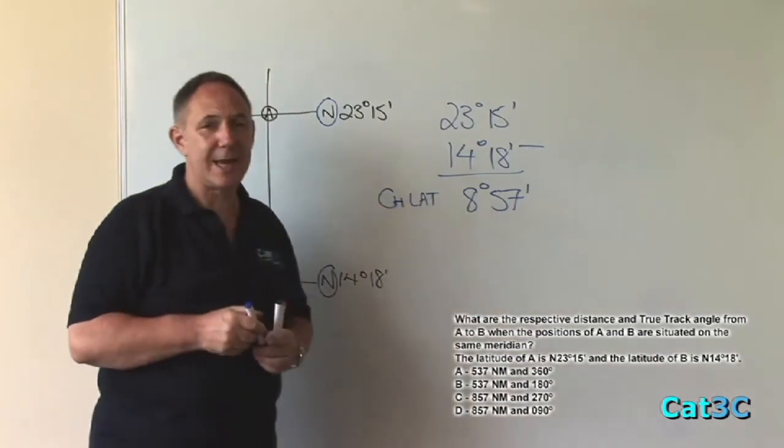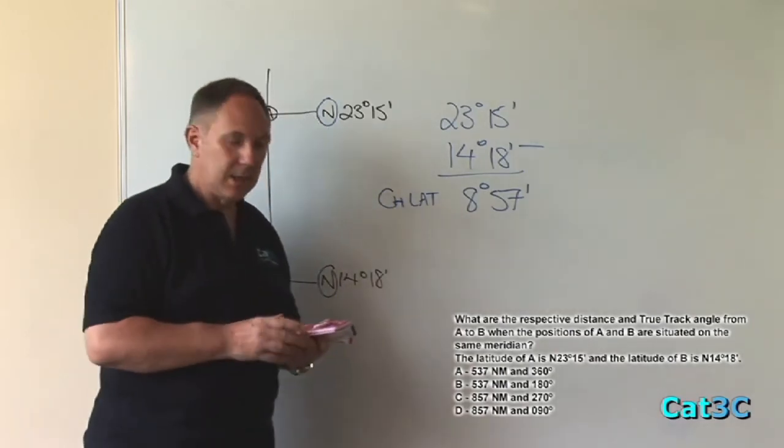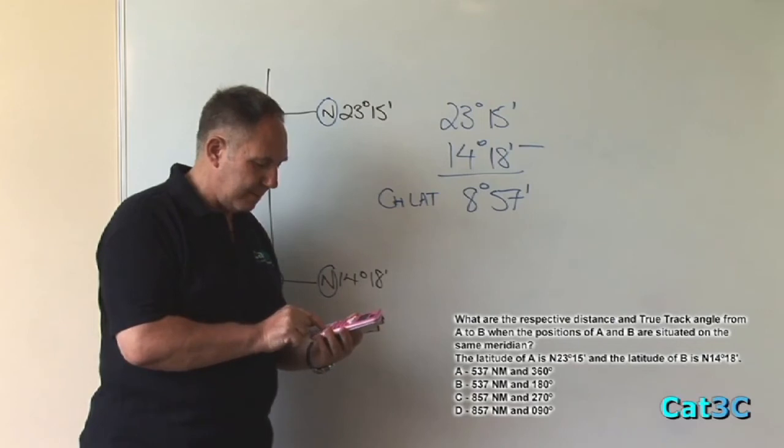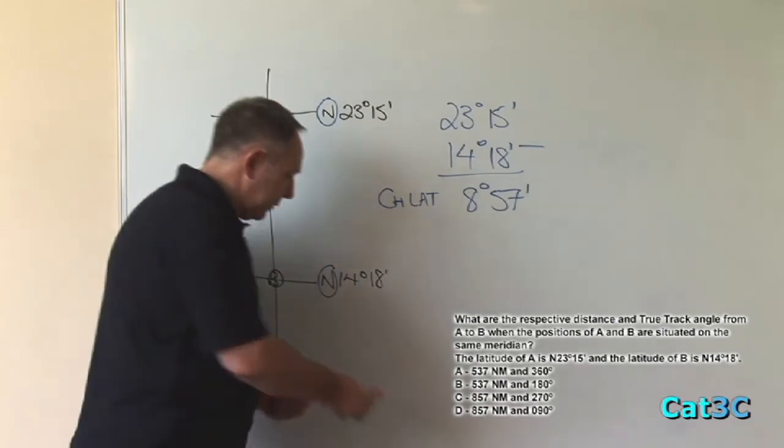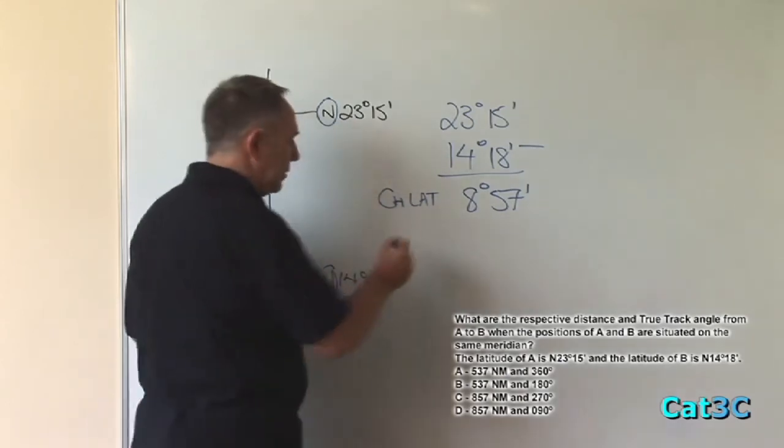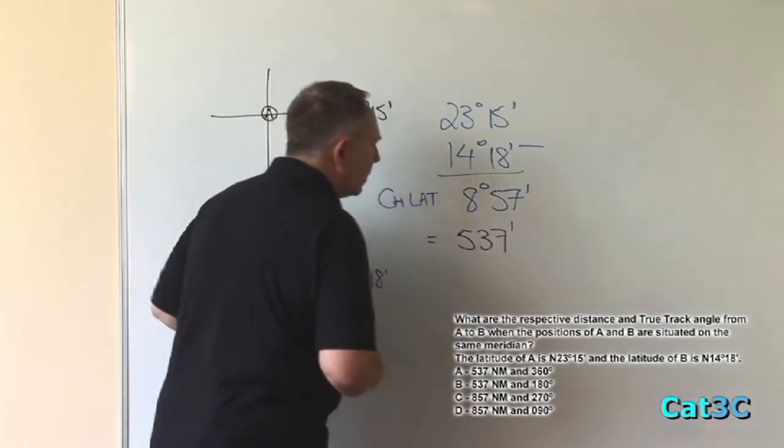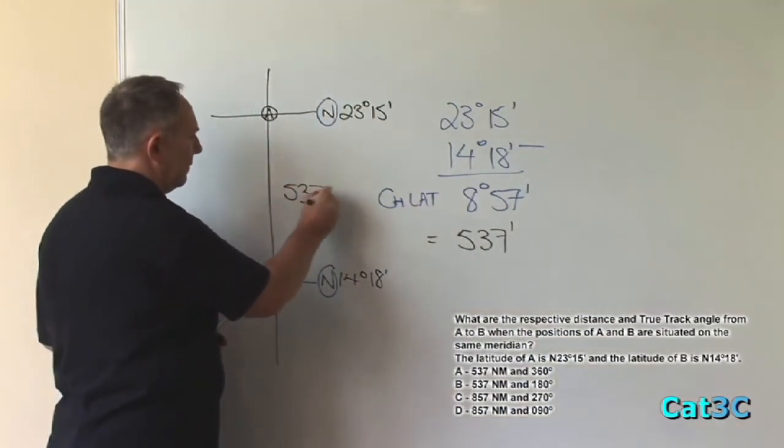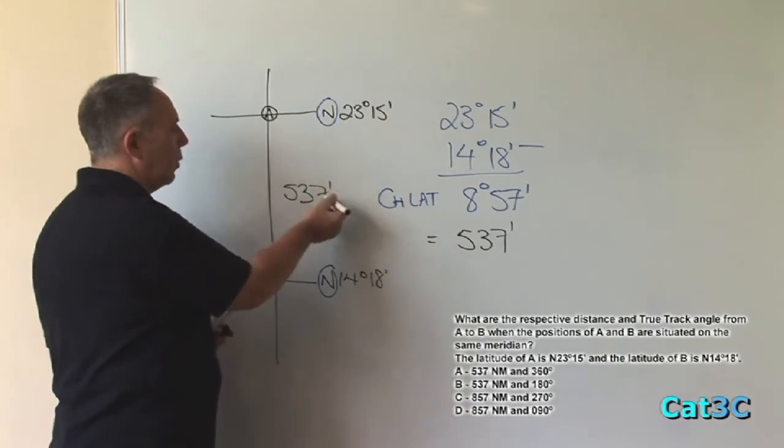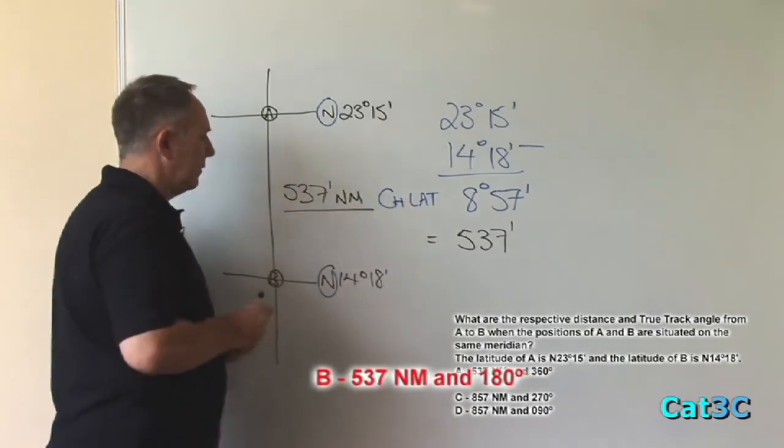But of course, the optional answers are in distances. So with 8 degrees 57 minutes in the calculator, I simply now press times 60 equals and that converts it into 537 minutes. Therefore, the change of latitude is 537 minutes, which given that one minute is one nautical mile is equal to 537 nautical miles.